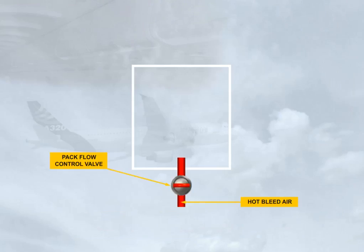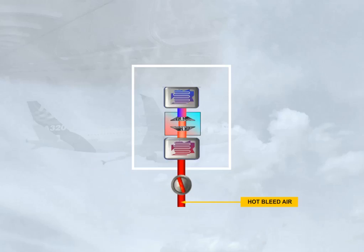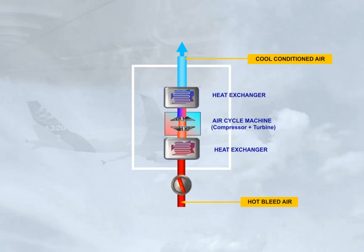Hot bleed air enters the pack via a pack flow control valve. Its function is to adjust the flow rate through the pack. The air then passes through several stages within the pack — heat exchangers and air cycle machine — so that it is cooled to provide a conditioned air output. In fact, sub-zero temperatures can be achieved.